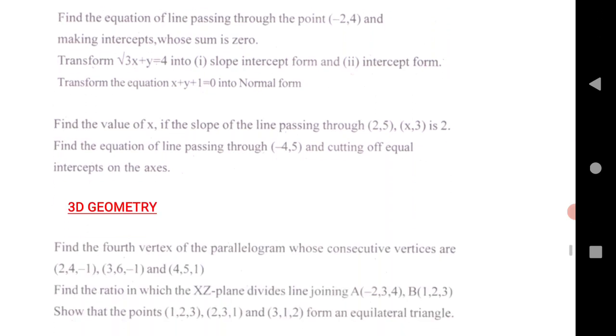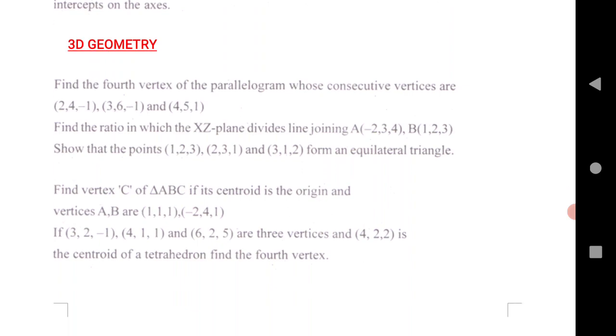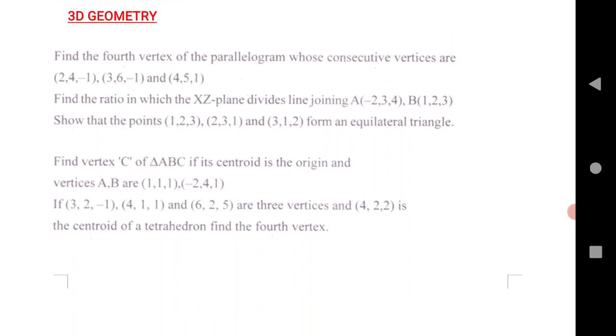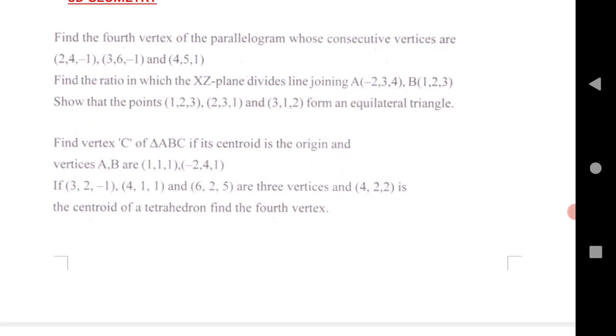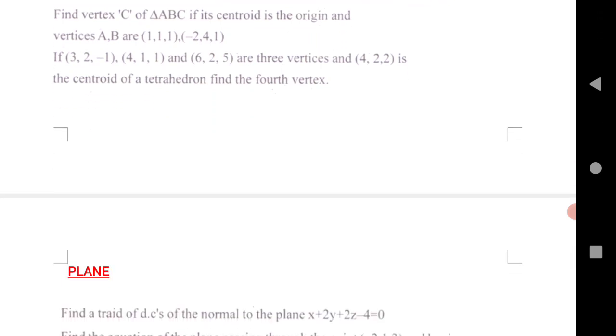Next is 3D geometry, a two marks question for both the states. Find the fourth vertex of a parallelogram whose consecutive vertices are given. Find the ratio in which exit plane divides the joining points. That one is equilateral triangle, you need to prove. Find the vertex C if the centroid is the origin. You know that when the centroid is the origin, that is 0 comma 0, you need to find out the vertices C when AB is given. Next is three vertices given, find the centroid of tetrahedron.